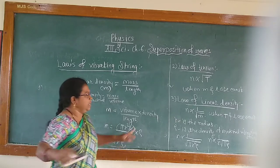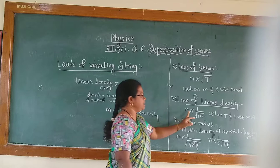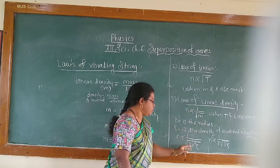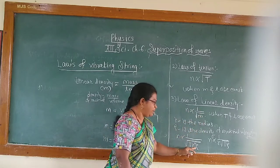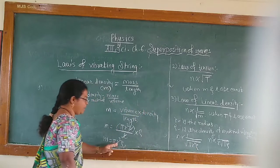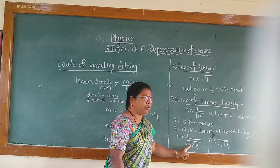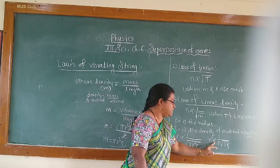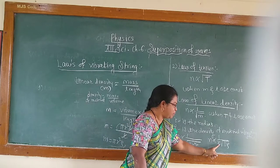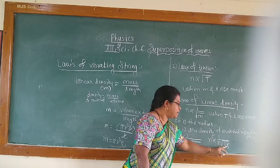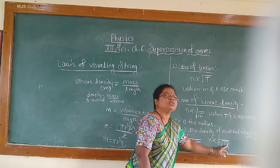Substituting this in this equation, that is N is inversely proportional to M, N is equal to 1 upon pi R square rho. Therefore, taking out the square root, N is inversely proportional to the radius, as well as N is inversely proportional to rho, the density of material.